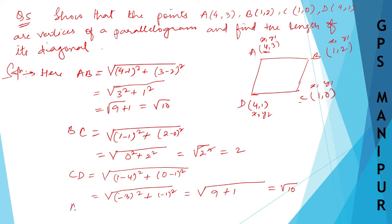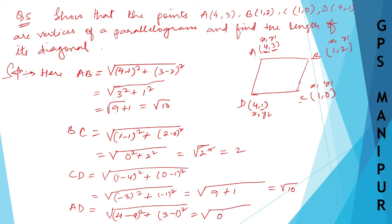Now let us find AD. Taking A as (x1,y1) and D as (x2,y2): root over (4 minus 4) squared plus (3 minus 1) squared, which is root over 0 plus 2 squared. The square and root cancel, giving AD equal to 2.